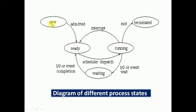We can see this in the diagram. This is the New state — when a process is admitted into the computer system, that is the new state. From the new state, the process becomes ready and comes into the ready state. When resources are available, the process goes to the running state. The ready state has the OS scheduler which dispatches the process to the running state.